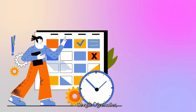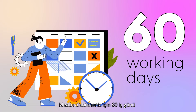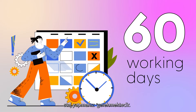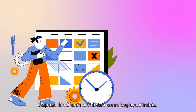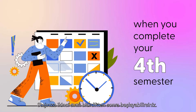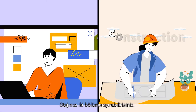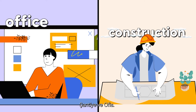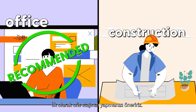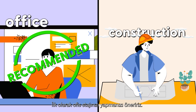Dear students, you have to complete 60 working days internship in order to be able to graduate. You may start your first internship when you complete your fourth semester. There are two different categories of internship, which are construction and office internships. It is recommended to start the internship with the office category for the first internship.